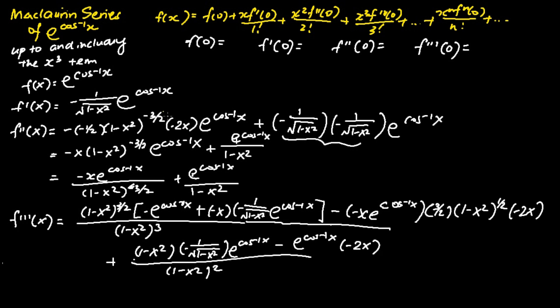Once we have f(x), f'(x), f''(x), and f'''(x), we substitute x equals 0 to find f(0), f'(0), f''(0), and f'''(0). For f(0): substituting x equals 0 gives e to the power of cosine inverse 0, which is e to the power of π/2 — so f(0) equals e. For f'(0): substituting x equals 0, the denominator is 1, so we get the negative of e to the power 1. Hence f'(0) equals negative e.